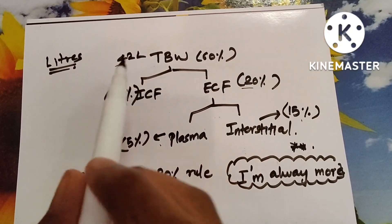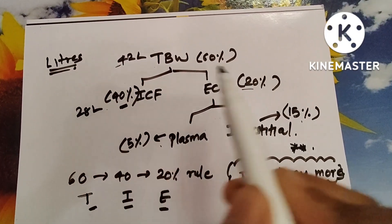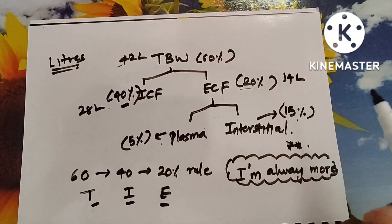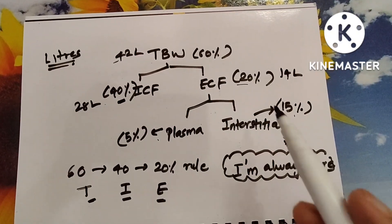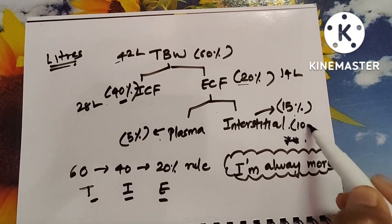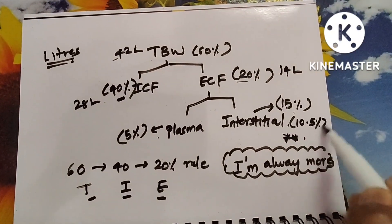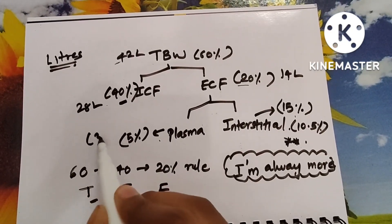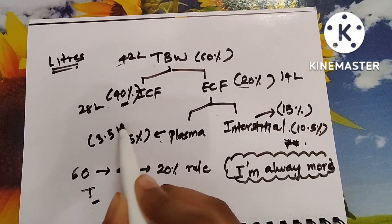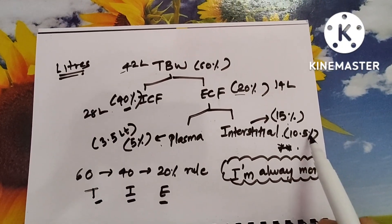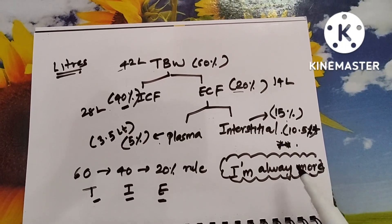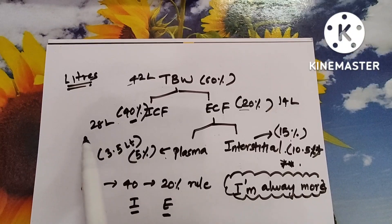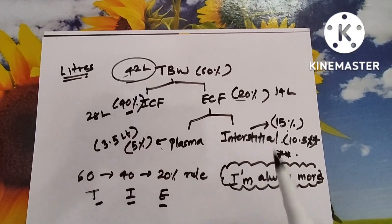In liters: total body water is 42 liters. ICF is 40% of 42 liters = 28 liters, and ECF is 14 liters (28 + 14 = 42). Interstitial fluid is 10.5 liters and plasma is 3.5 liters, so 10.5 + 3.5 = 14 liters of ECF. And 14 + 28 = 42 liters total body water.